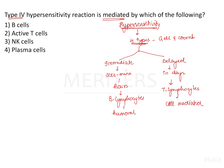Out of the four types of hypersensitivity, type 1, type 2, and type 3 come under immediate type of hypersensitivity, whereas type 4 is a delayed hypersensitivity reaction and it is cell mediated.